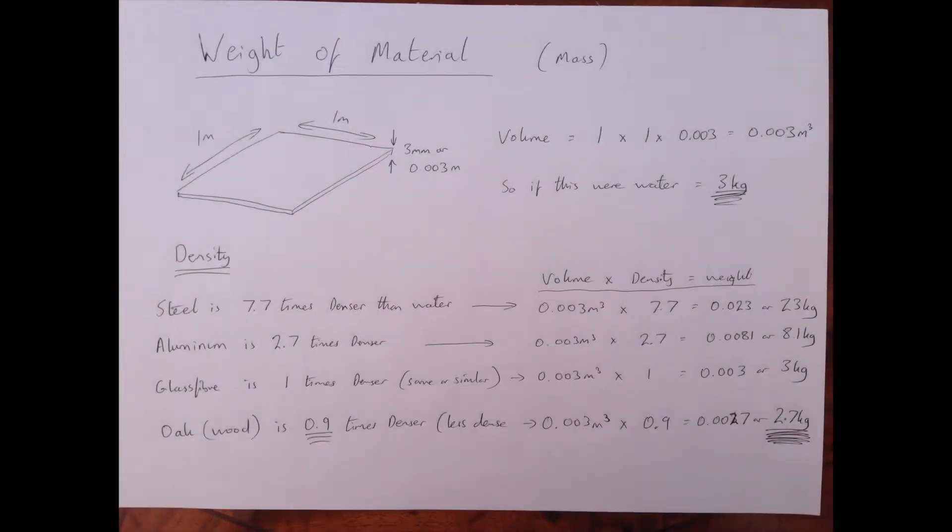To get the weight of material that you are going to actually stick in, you have to do exactly the same calculation. You calculate the volume of the material and then times it by the density of whatever you are using. For example, I've taken a 1 meter by 1 meter sheet here, 3 millimeters thick, and that gives me 0.003 cubic meters. If this were water it would weigh 3 kilograms.